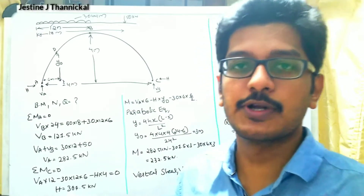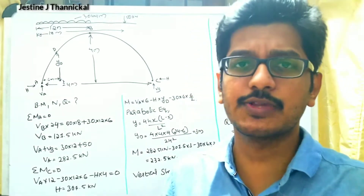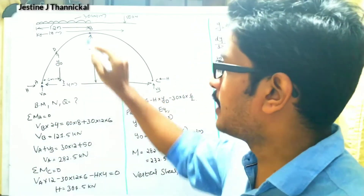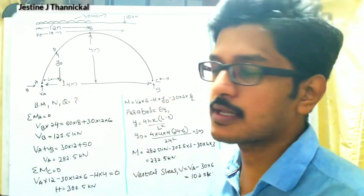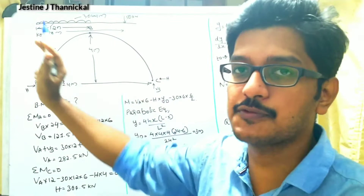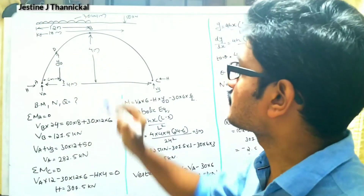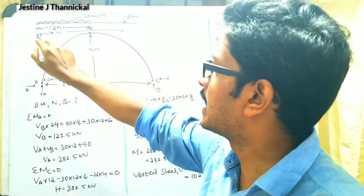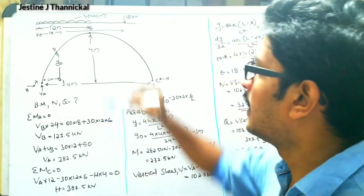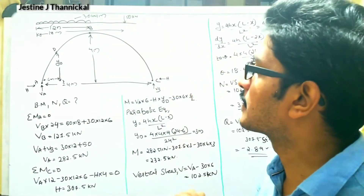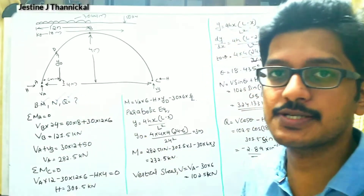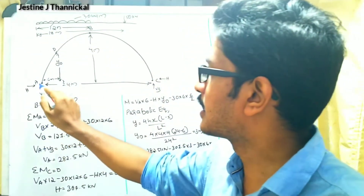Please try to solve this by yourself before going further, and draw the sketch by yourself. In this question, a three-hinged arch is given with hinges at A, B, and C. Point B is the crown point, and both A and C are the hinged supports. The loads are given as 30 kilo Newton per meter acting over the left half portion, and 50 kilo Newton acting at 18 meters from the left support — that is, 6 meters from the right support. The total span length is 24 meters and the rise of the crown point is 4 meters.